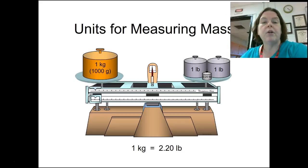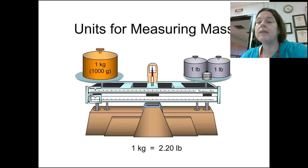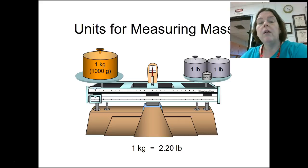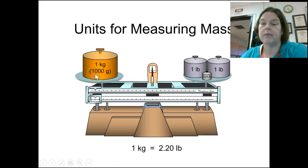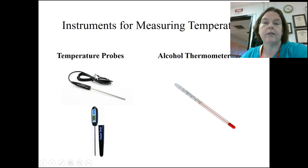Units for measuring mass: we use kilograms and grams. Pounds are something we're familiar with in this country, but we don't use pounds in science. We always go with the SI units — kilograms and grams, never pounds.